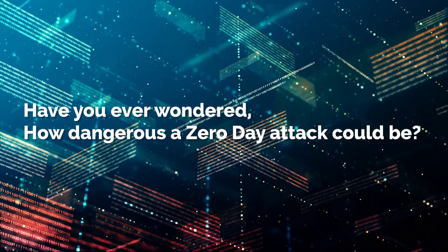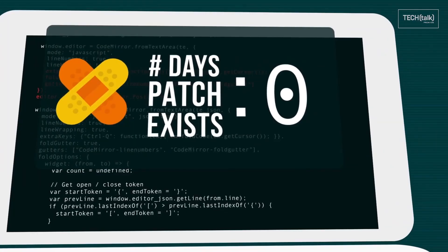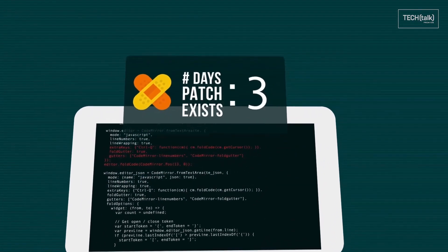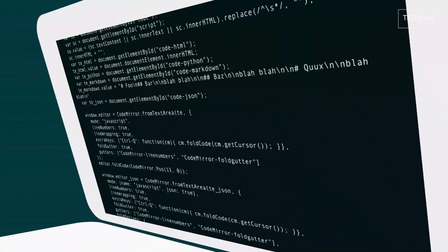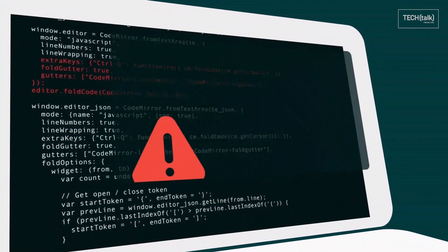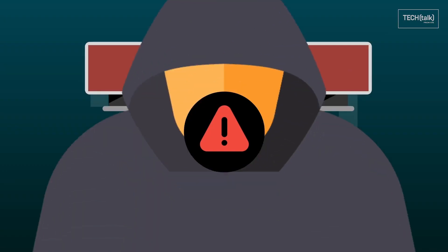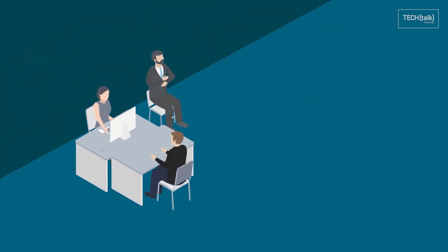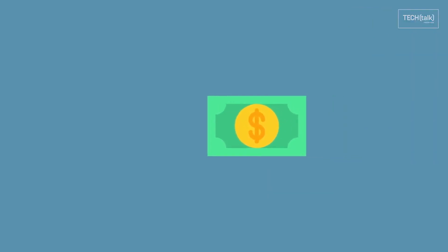Have you ever wondered how dangerous a zero-day attack could be? There are various dangers associated with zero-day attacks. If the vulnerability is left unaddressed or a software patch is not released soon, threat actors can easily exploit these vulnerabilities and carry out a wide array of malicious activities. The dangers depend upon the nature of the vulnerability. For example, there might be a network security flaw allowing threat actors to gain access to the network and elevate their privileges. Threat actors may also exploit vulnerabilities in the database or file system to extract consumer data, intellectual property, or financial records. They might also insert malware, remote executable code, and ransomware to damage information systems.